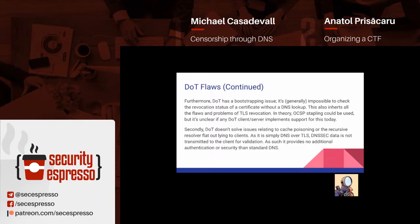DoT doesn't actually solve the cache poisoning or the recursive resolver flat-out lying. It is basically just DNS over TLS — you have all the problems with DNS, you've just stopped passive wiretapping. And even then there's a question mark, because if a client decides to accept a self-signed certificate, you might be able to completely sidestep that.